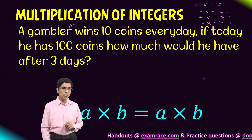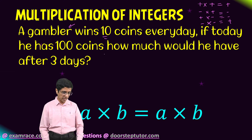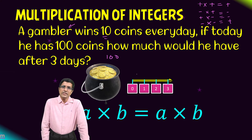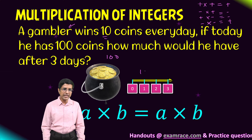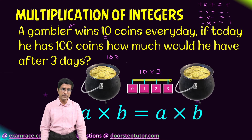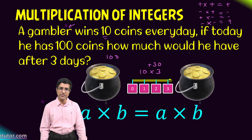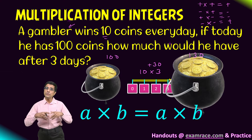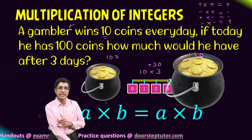There is a gambler who wins 10 coins every day. He starts with 100 coins — what would happen after three days? Because he is winning, his number of coins would increase. He's winning 10 coins every day for three days, so that is 30 additional coins. The final answer would be 100 plus 30, which is 130. This is what we would expect — his total amount of money to actually increase. Mathematically we get the same answer.